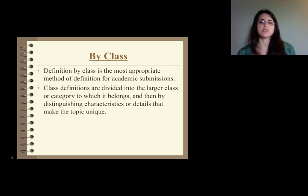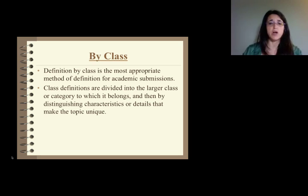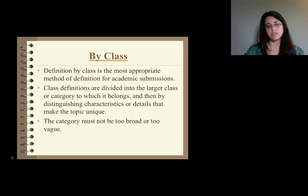Class definitions are divided into larger classes or categories to which they belong, and then using distinguishing characteristics we begin to make that topic unique. An earlier example was stickball and how we compared it to a sport, and then we could be more specific and say a sport as in baseball. We started out with this very large class, sport, and then began to put it down to baseball and then began to make it more specific based on its identifying characteristics. Definition is often just a method of starting out very general and getting more and more specific as you go.